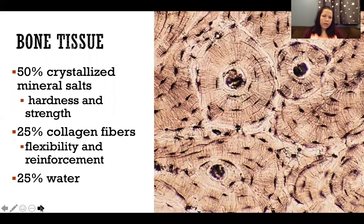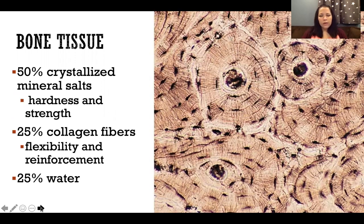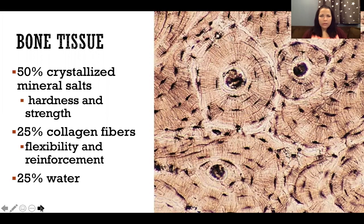Bone tissue is made up of about half crystallized mineral salts — calcium, magnesium, zinc, and so on — which give bone its hardness and strength. Then about 25% collagen fibers, which give it flexibility and reinforcement. And another 25% water. It might seem surprising, but 25% of our bone tissue is water — we often talk about muscle and fat when discussing body composition, but 25% of bone mass is water.